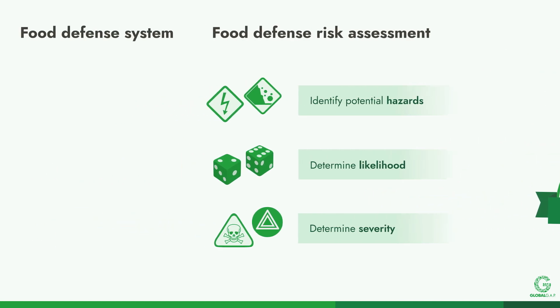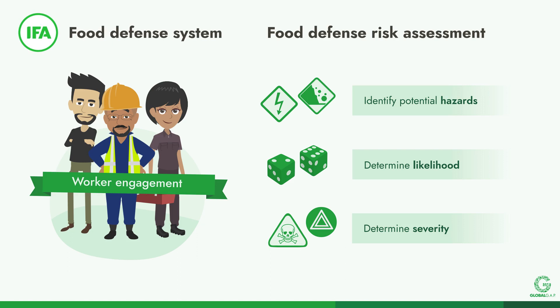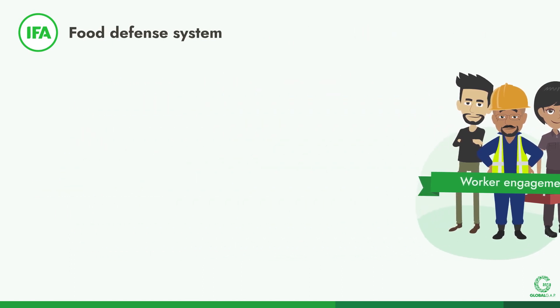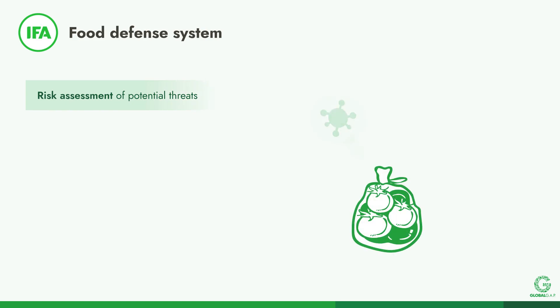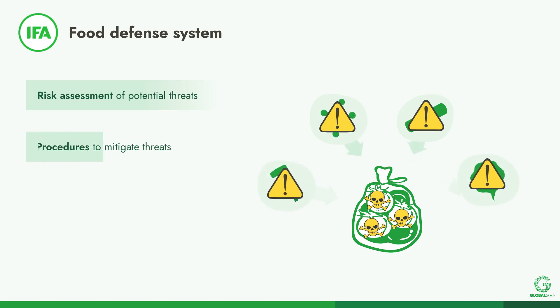The food defense system relies on positive and consistent worker engagement. The Integrated Farm Assurance standard requires that the food defense system includes a risk assessment for identifying potential threats to the safety of products, taking into account risks from deliberate attempts to inflict contamination or damage, and procedures to mitigate the identified threats.